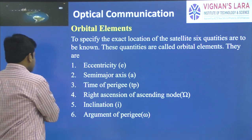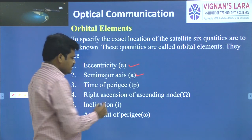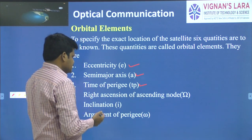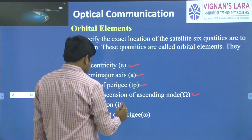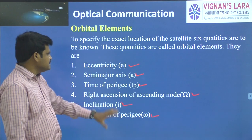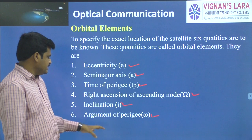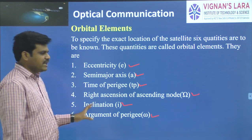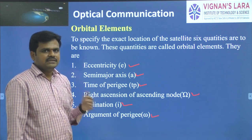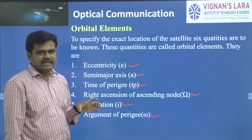The six orbital elements are: eccentricity of the elliptical orbit, semi-major axis of the elliptical orbit, time of perigee, right ascension of ascending node, inclination, and argument of perigee. These are the six quantities called orbital elements. If we are able to calculate these six quantities, then we will be able to locate the satellite very easily.